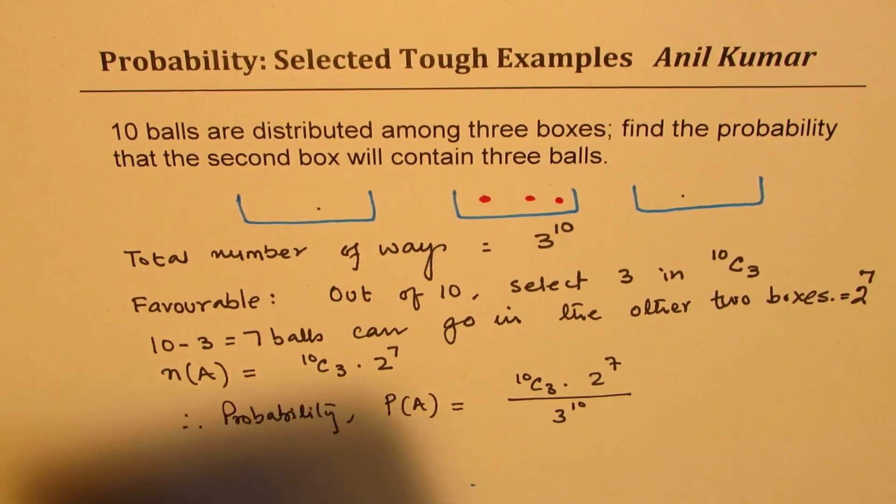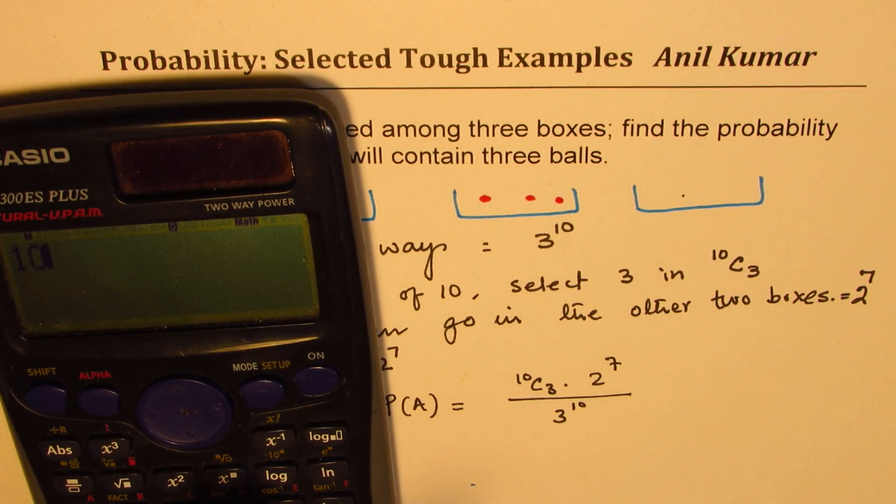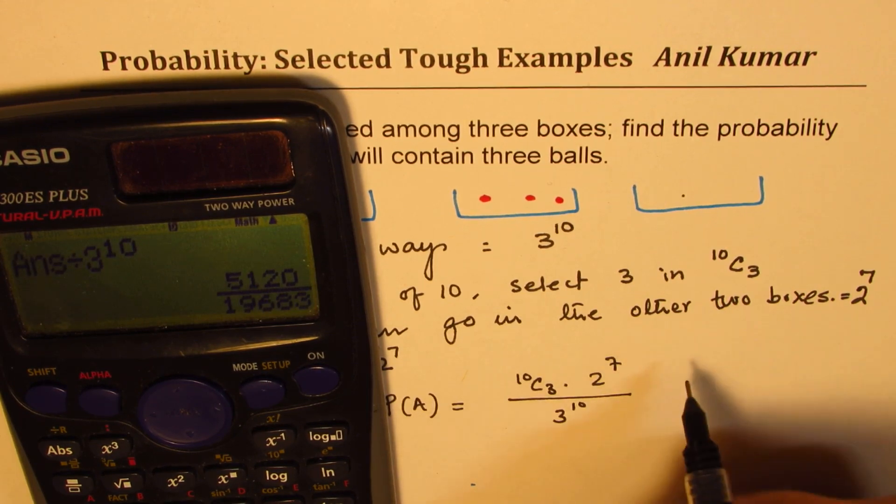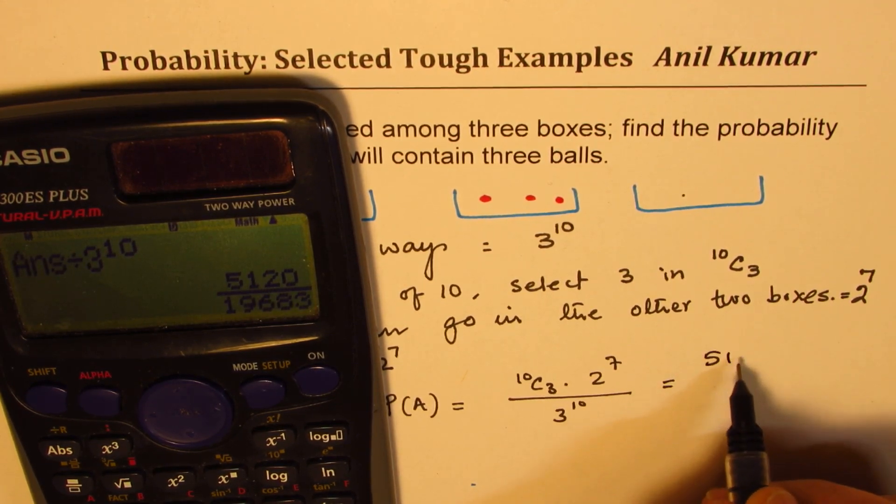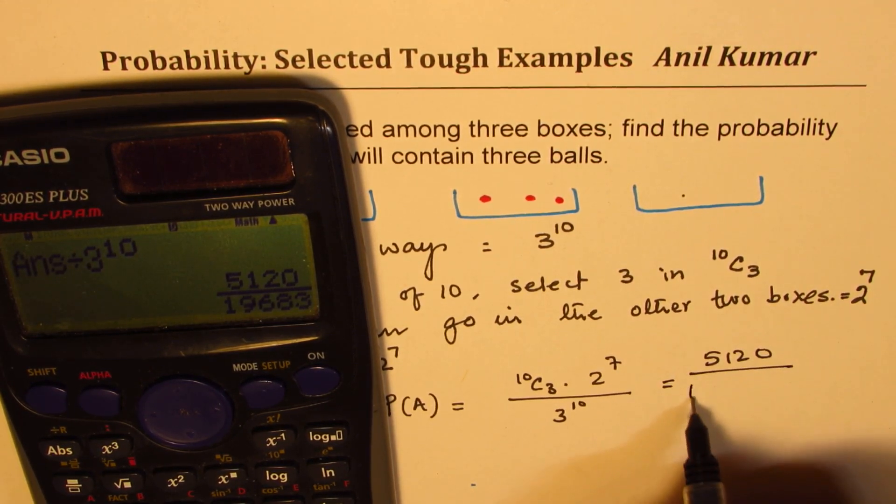Let's see the number also. We have 10C3 times 2 to the power of 7, and then we are going to divide this by 3 to the power of 10. That gives you 5120 over 19683.